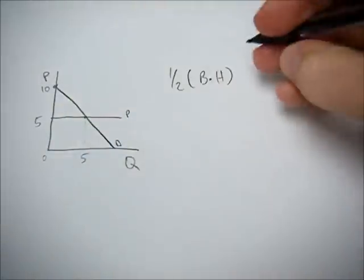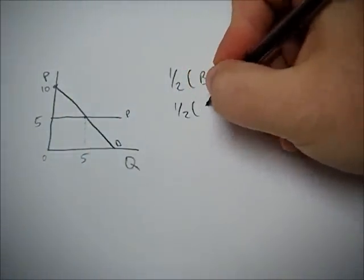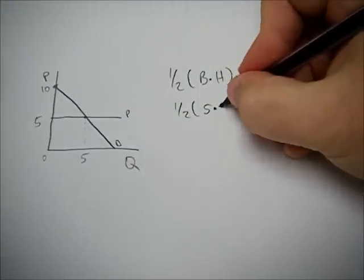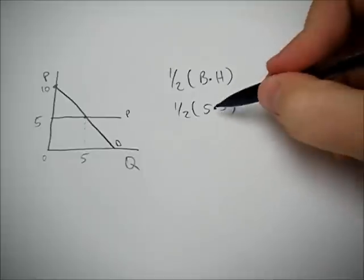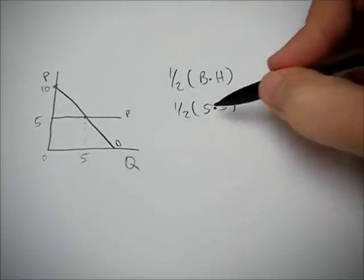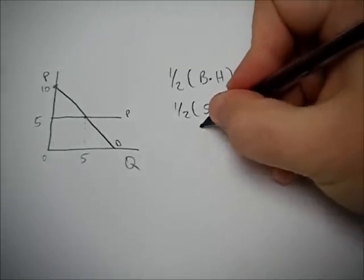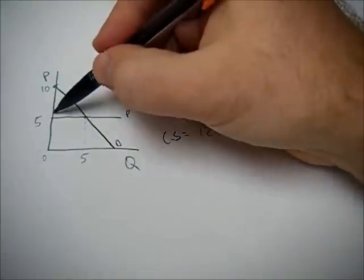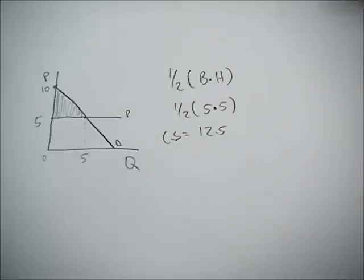The base goes from 0 to 5, so our base is 5. What's our height? It goes from 5 to 10, so our height is also 5. So 5 times 5 is 25. Half times 25 gives us 12.5. So our consumer surplus would be equal to 12.5.